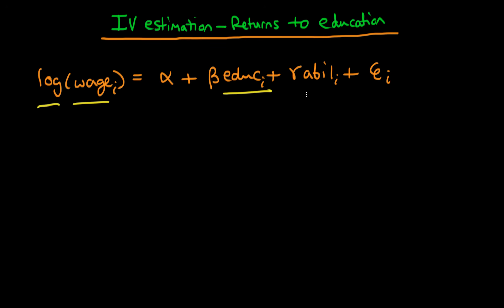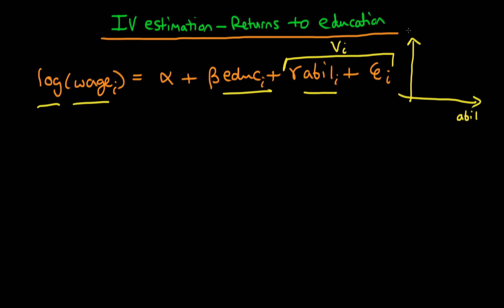We also think there might be another variable affecting an individual's level of wages: something we call an individual's level of innate ability. When we write the equation it seems simple to estimate, but the problem is we don't generally observe innate ability, so it gets contained in a composite error term V_i. This poses a problem because innate ability might be correlated with an individual's level of education — the number of years of education they choose. Because of this positive correlation, and because innate ability affects wages, the OLS estimate for beta is going to be upwardly biased — our education variable is taking some of the credit of the ability variable.